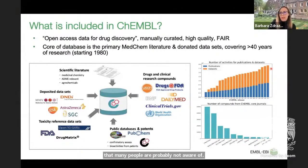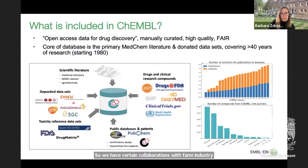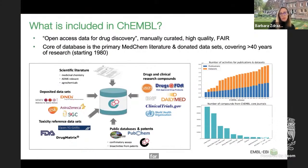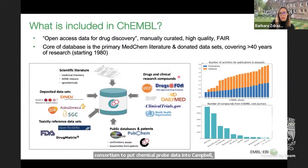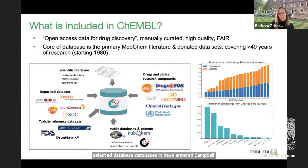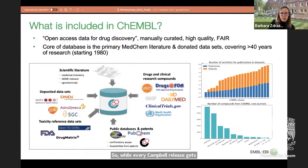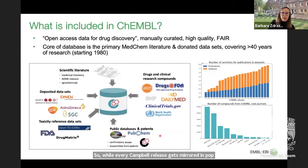Where do we get these donated datasets from? We have collaborations with pharma industry, with neglected disease organizations like the Medicines for Malaria Venture, and with the Structural Genomics Consortium to put chemical probe data into ChEMBL. We also have lots of drug and clinical candidate data in ChEMBL. Selected databases like PubChem and BindingDB have entered ChEMBL in the past, though these are rather static. And we have selected patents as well.